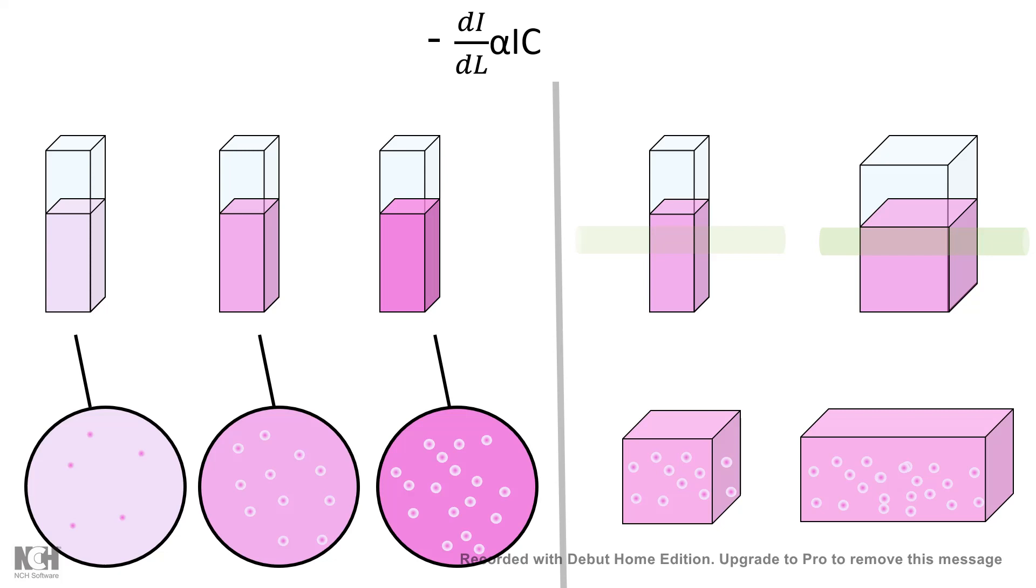So more light would be absorbed, the probability is more. So that's how it is both related to concentration and also the path length.